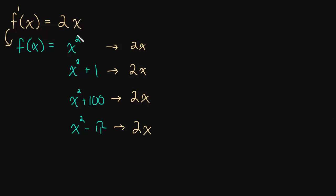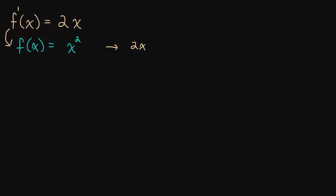So instead of trying to pick a constant — because we know there's an infinite amount of constants we could put here, and all of these functions are different but when you take the derivative they all become 2x — instead of trying to choose one, we're just going to add an arbitrary constant. We're going to say plus c, plus some constant. We know that when we take the derivative, that constant goes away and the derivative will be 2x. Also notice that the constant could be 0, in which case we would just have x squared.